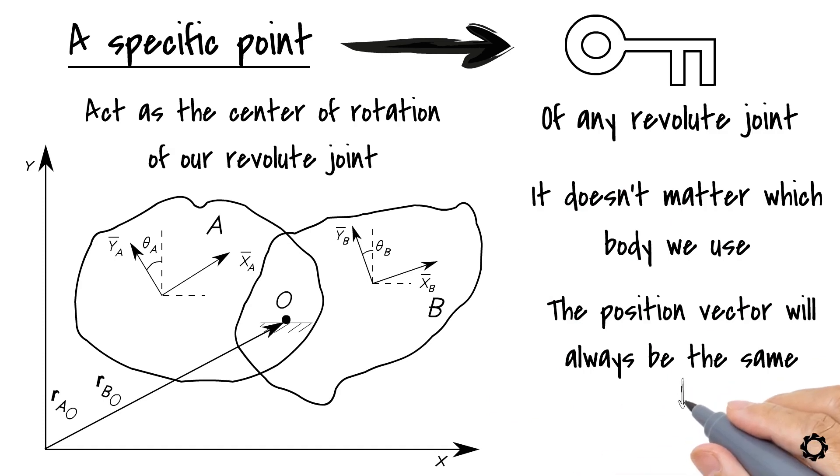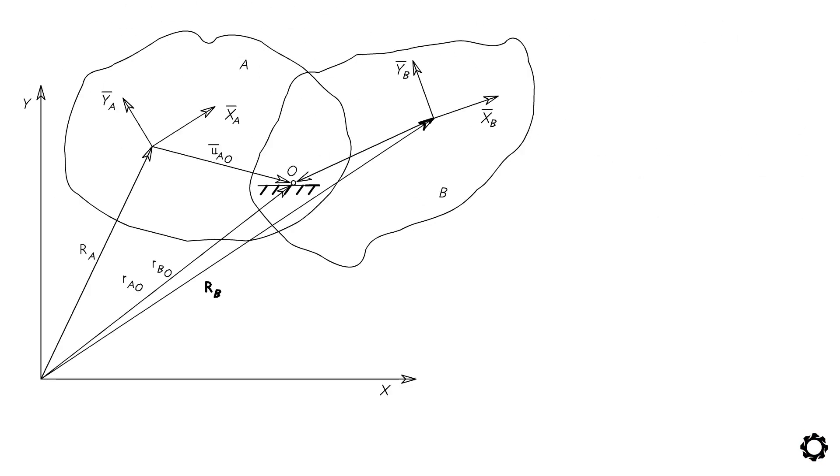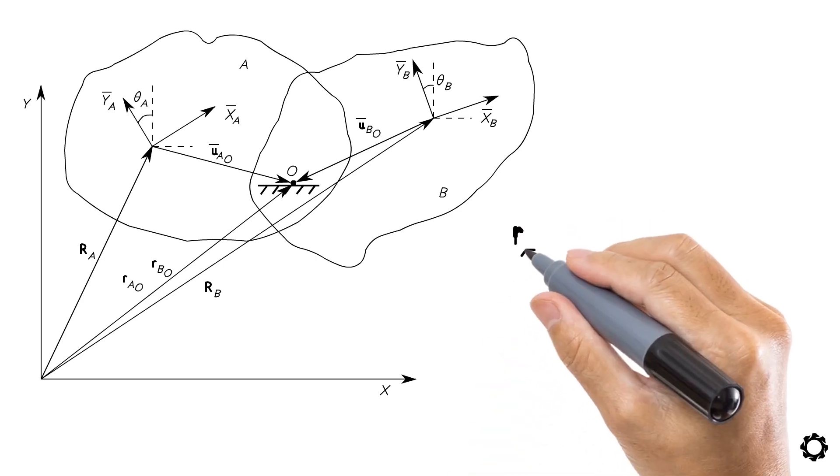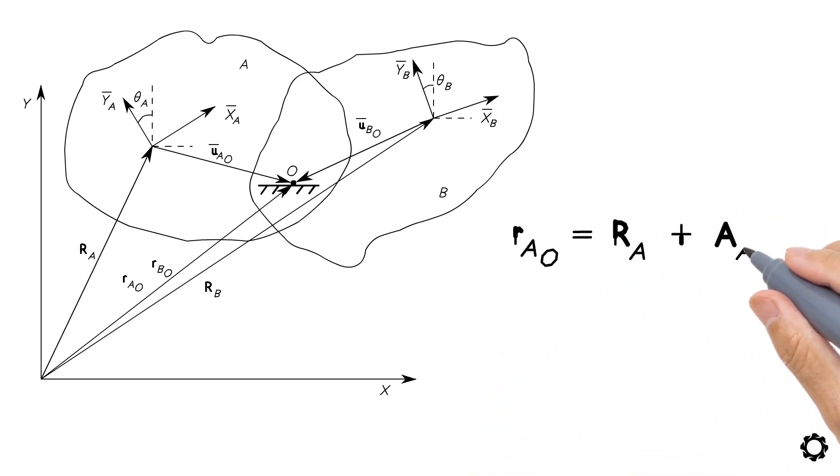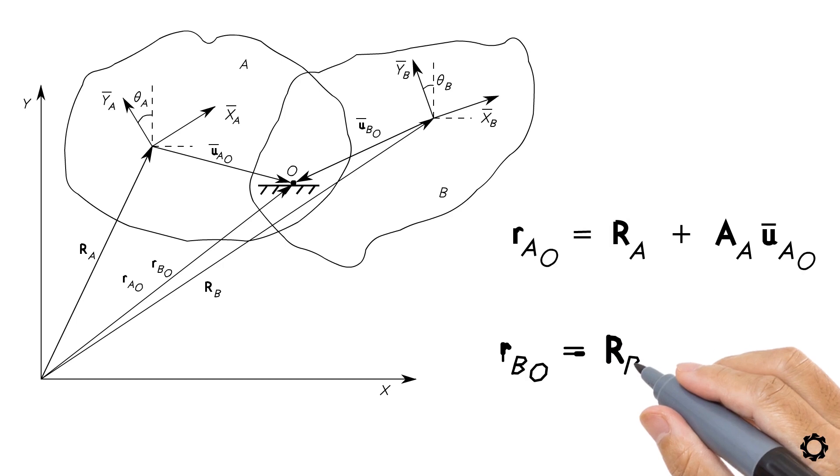We can write this last sentence in mathematical form as RO equals RAO equals RBO. What will happen if we write down the position vector of this point using the two bodies as mentioned before? Let's do it. RAO equals RA plus AA U bar AO and RBO equals RB plus AB U bar BO.